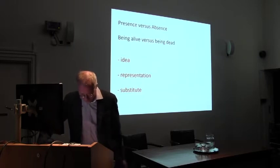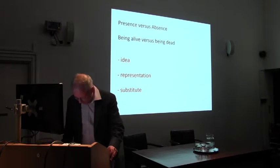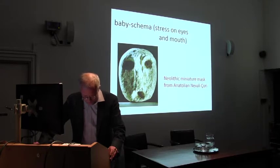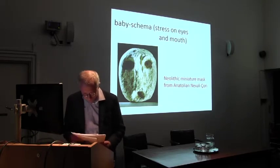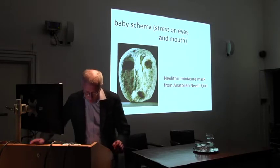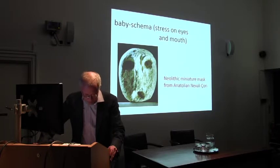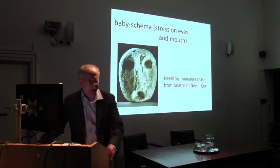Following Konrad Lorenz, one key stimulus in human behavior is the baby schema — an extremely reduced and simple schema of the human face. We know such simple schemas from Paleolithic and Neolithic representations of faces and masks, as shown in the early Neolithic miniature mask from Anatolian Nevali Çori. In these images, as well as in the famous baby schema, the eyes as well as the mouth appear especially significant. To understand an image properly, one needs to know a lot about cultural context as well as the period eye — a hermeneutic concept developed by Baxandall many years ago, probably while he was already director here at the Warburg Institute.